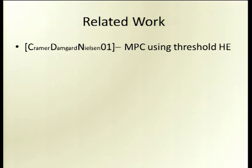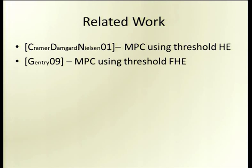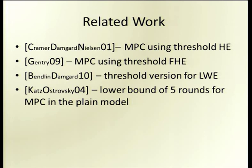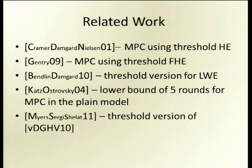Some words about related work. CDN were the first to show MPC with threshold homomorphic encryption; in those days there was no FHE yet. Gentry, in 2009, showed how to do MPC using threshold FHE. Bendin and Damgard showed how to do a threshold version for LWE, which our scheme also relies on — we took ideas from that paper. Katz and Ostrovsky showed a lower bound of five rounds for MPC in the plain model, which means the CRS is essential to get three rounds. And there is concurrent work showing another threshold version of another FHE scheme.